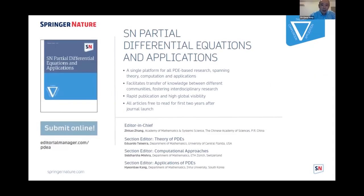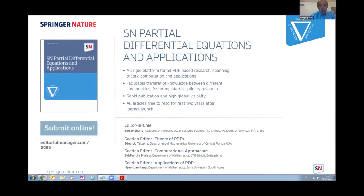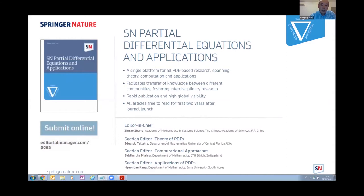I've known Thomas for more than 30 years, so please allow me to introduce briefly his professional background. Thomas obtained his PhD from Munich in 1987, and then he went to Heidelberg for a junior position, and he was awarded a Heisenberg Fellowship in 1995. Then he spent a year in ETH Zurich, and he was hired as a full professor in Gießen University in 1996.